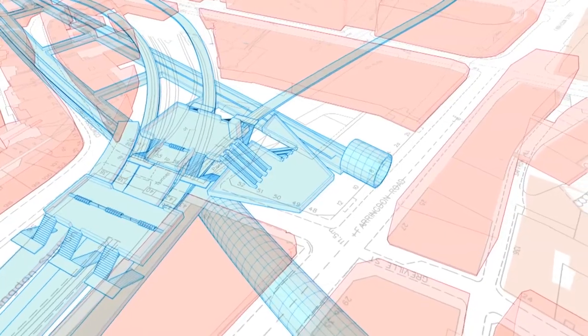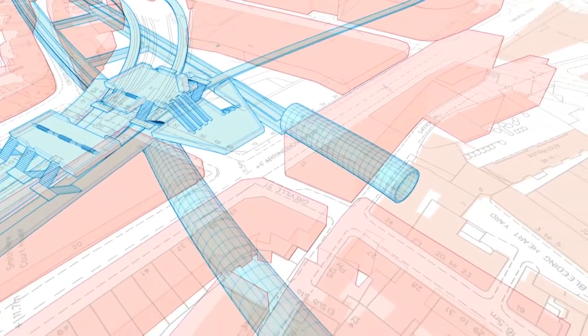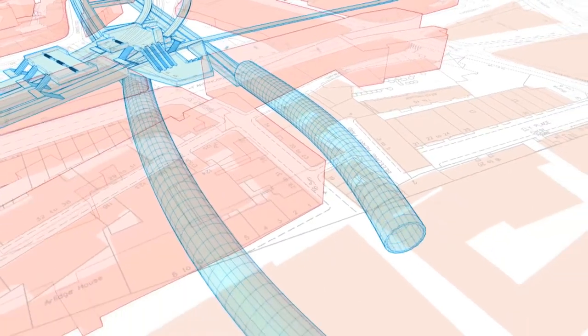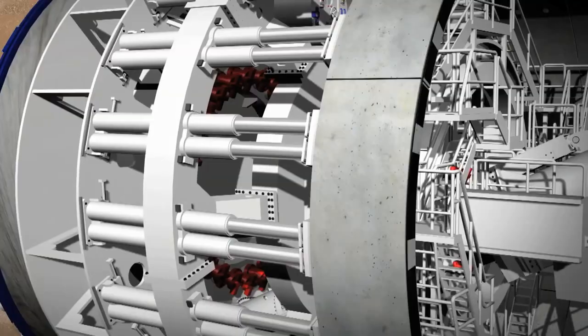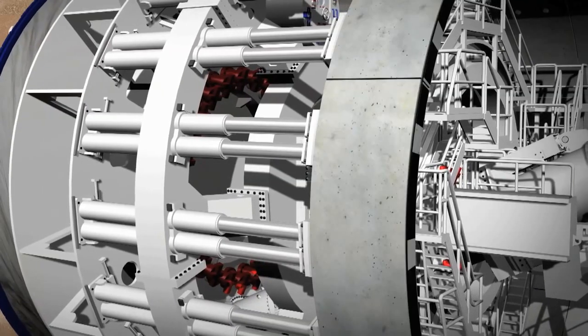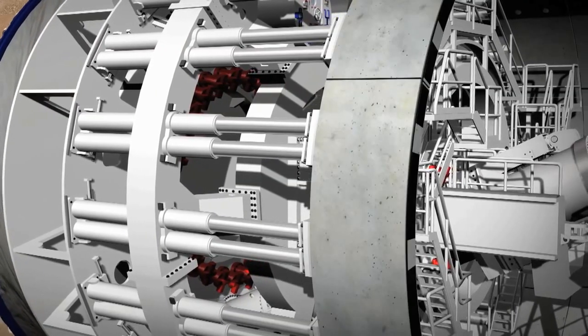Each individual tunnel ring is built in a slightly conical form. This means that curves can be built along the tunnel route by changing the direction of the cone. The hydraulic cylinders are extended again to secure the segment into position.